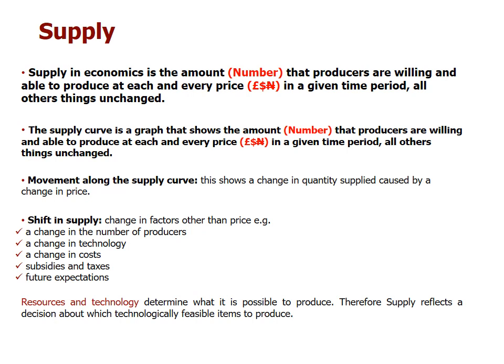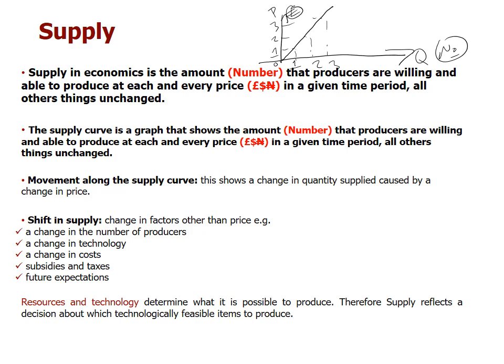A movement along the supply curve shows a change in quantity caused by a change in price. We have price on the vertical axis and quantity on the horizontal, with a positive relationship. When price moved from one to two, quantity moved from one to two; when price moved from two to three, quantity moved from two to three. This is a movement along the supply curve — caused only by a change in price.